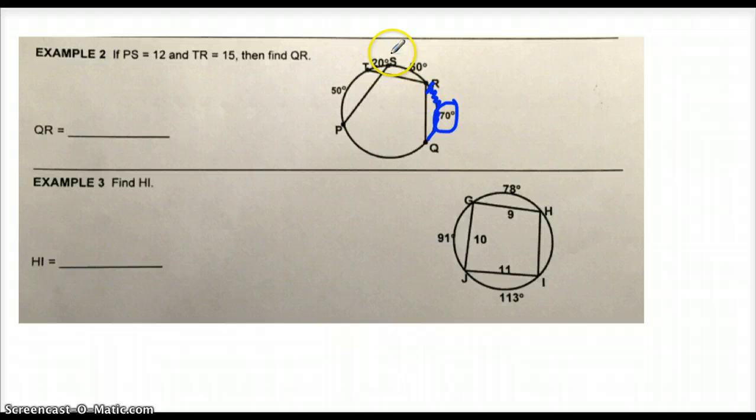From S over to P makes up a 70-degree arc. That chord, PS, cuts off that 70-degree arc, so therefore, PS and QR are congruent. And since PS is 12, QR must also be 12.